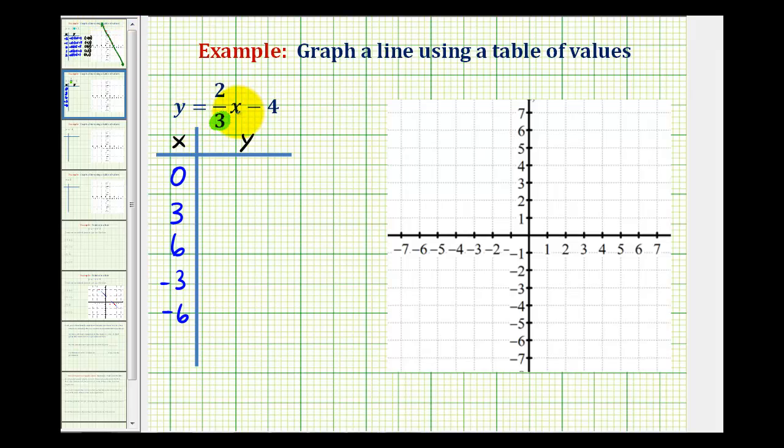We'll first substitute 0 for x, so we'd have 2/3 times 0 minus 4. Well, that's going to be equal to negative 4, which means our line would contain the point with an x coordinate of 0 and a y coordinate of negative 4.